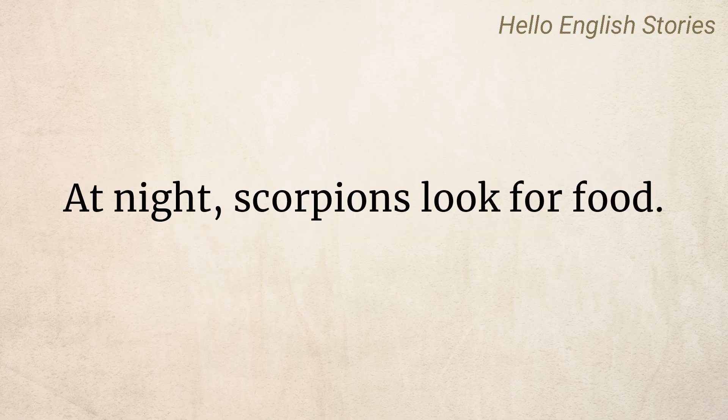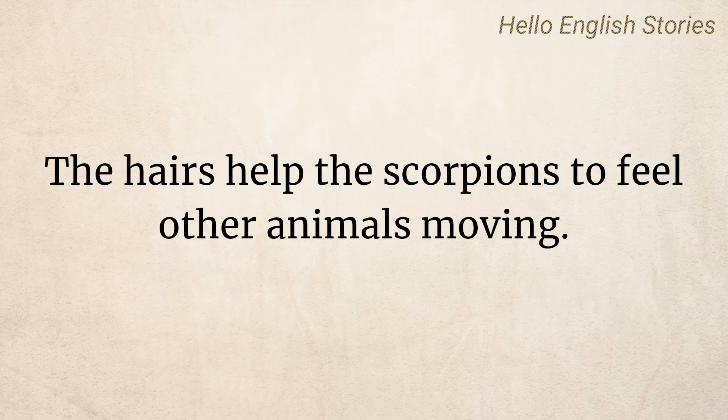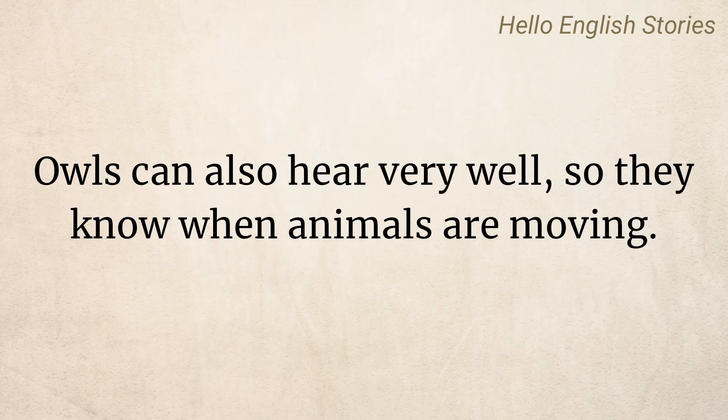At night, scorpions look for food. Scorpions have tiny hairs on their legs. The hairs help the scorpions to feel other animals moving. Some animals, like desert cats and owls, have special eyes to help them see well at night. Owls can also hear very well, so they know when animals are moving.